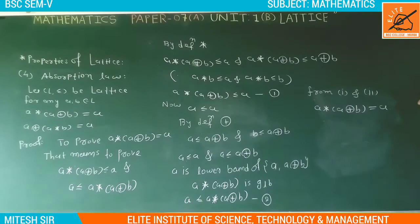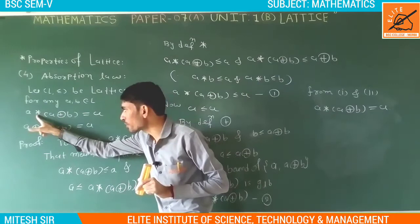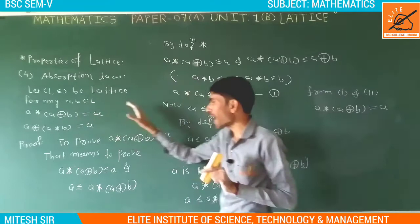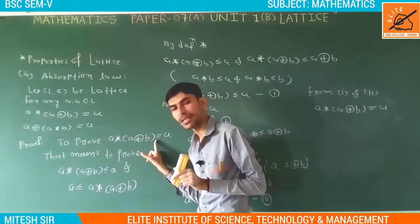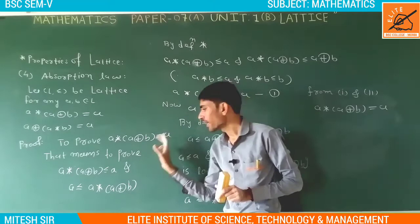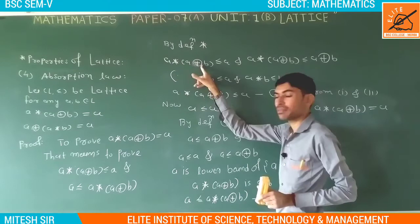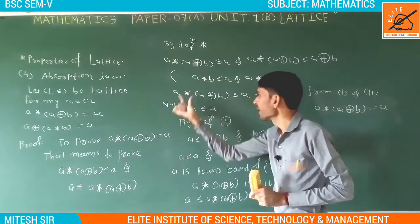From result one and two: A star (A ring sum B) is related to A, and A is related to A star (A ring sum B). Therefore, A star (A ring sum B) is equal to A. This completes the proof of the first part.